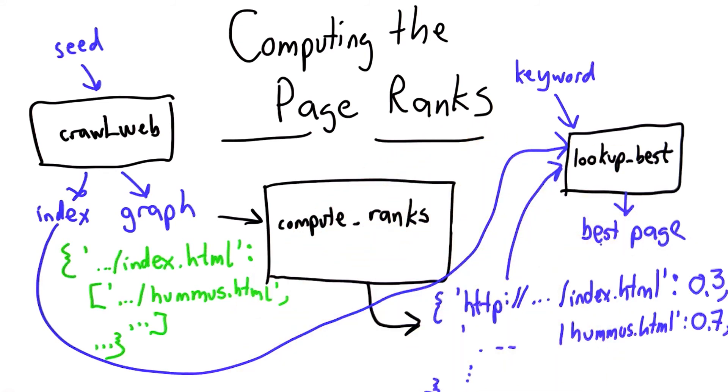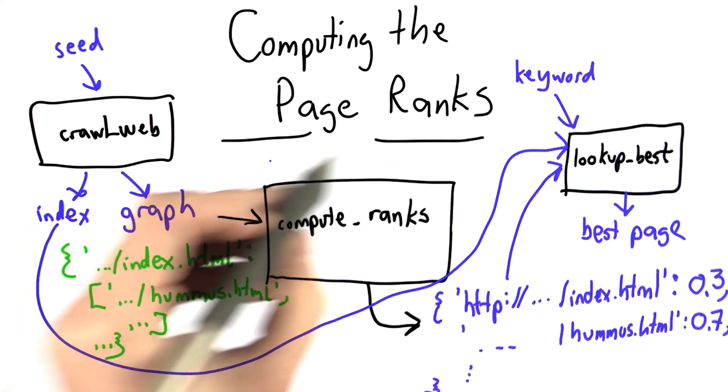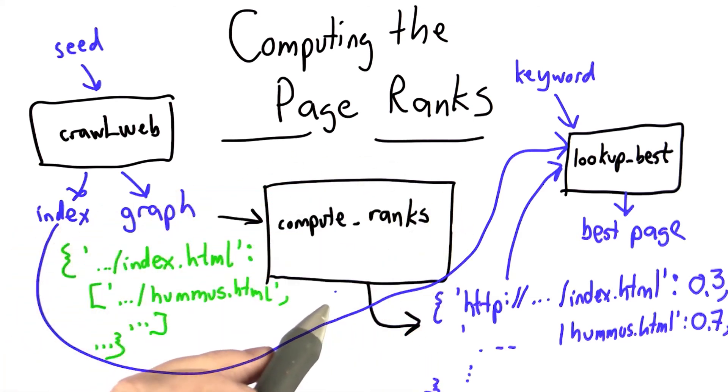Once we've done that, you'll have a complete search engine. You'll have a crawler that starts from a seed, finds pages, produces an index, and produces a graph. That graph is the input to compute_ranks. Compute_ranks uses our page ranking algorithm to figure out the pages that are most popular.